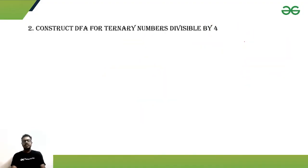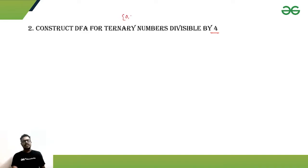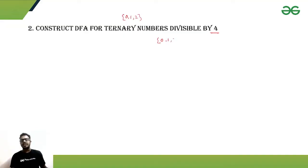Now we'll do the same example on ternary numbers — drawing a DFA where a ternary number is divisible by four. In ternary numbers the base is three, unlike binary where the base is two. The symbols used are zero, one, and two. Divisible by four means there will be four remainders, so there will be four states.